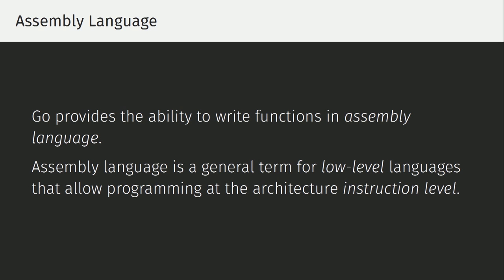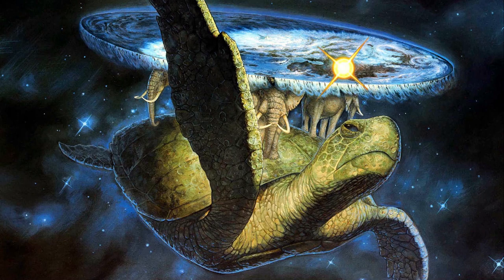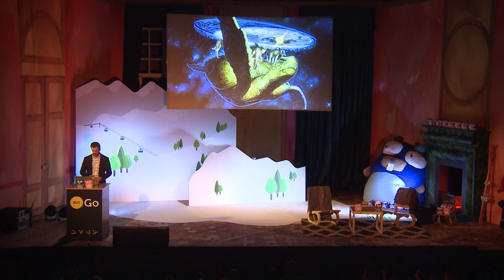Let's begin with what is assembly language. Go provides the ability to provide an implementation of a function in assembly. It's a general term for a low-level language which gives you the ability to program a particular architecture at an instruction-by-instruction level. When I think of how modern software and hardware works, I end up thinking of the expression: it's turtles all the way down. If you're at the assembly level, you're probably somewhere near the bottom of this stack.